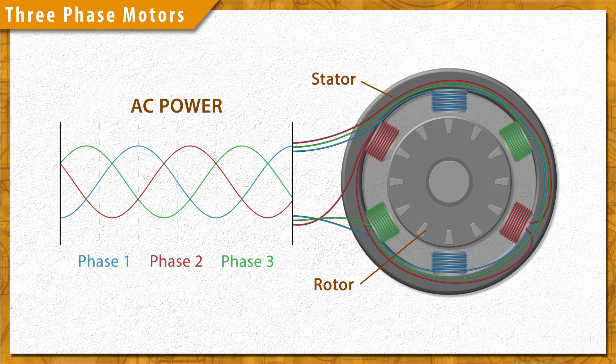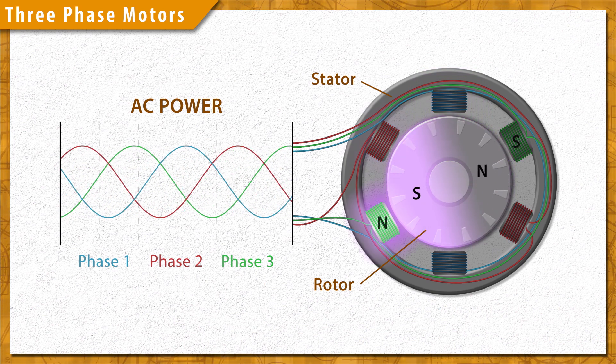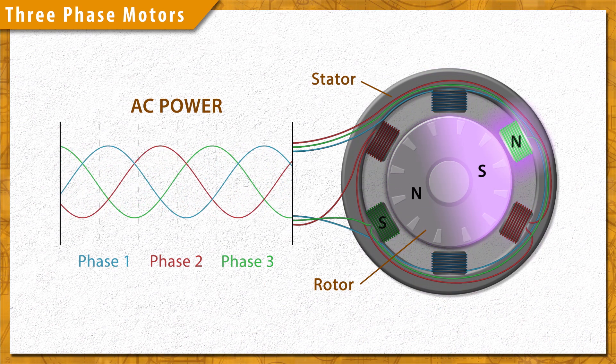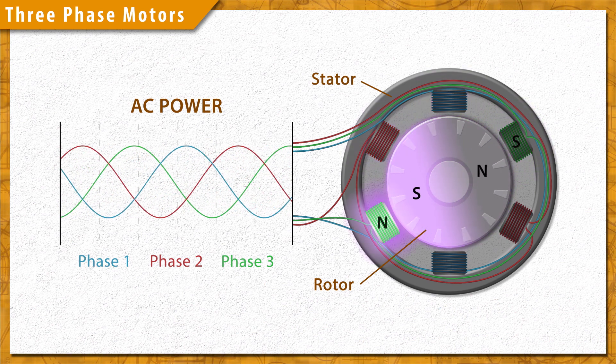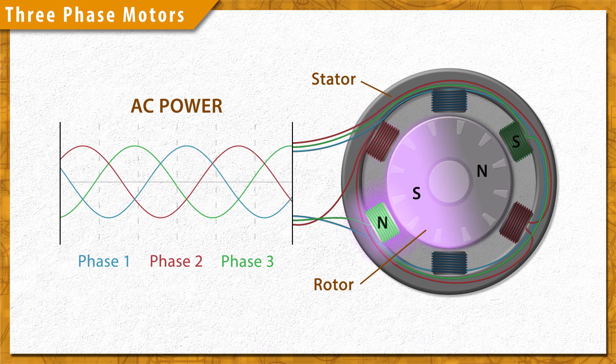As current flows through the wires, a magnetic field is created. This induces a magnetic field in the rotor which causes it to align with the stator field. As each phase cycles, it creates a rotating magnetic field. This causes the rotor to spin as it chases the magnetic field of the stator.